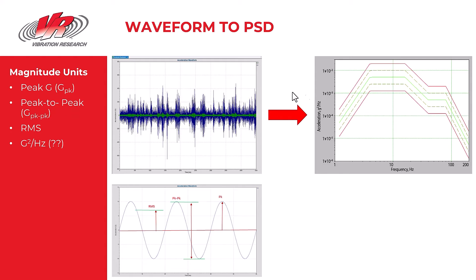When the time domain data is converted into frequency domain a PSD is produced. We've looked at that in a previous video. This average spectrum of random acceleration is displayed with units of G squared per Hertz. How are these values of G squared per Hertz generated?